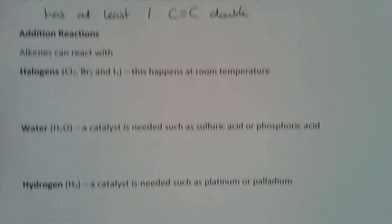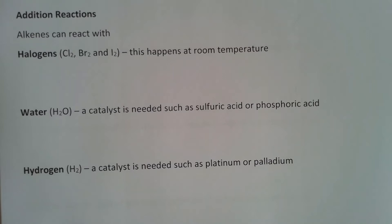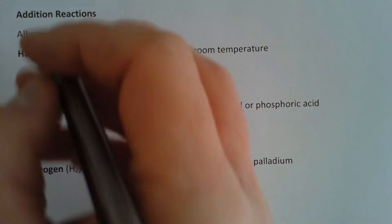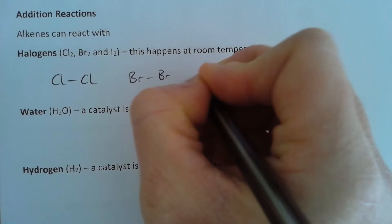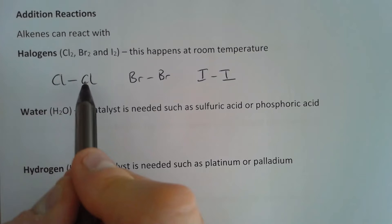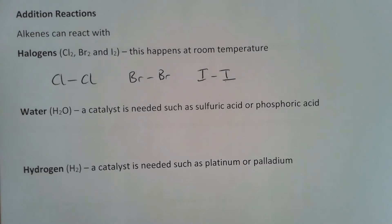Alkenes undergo addition reactions. They can undergo addition reactions with halogens — halogens is the general name for any Group 7 element, and we need to know chlorine, bromine, and iodine. These reactions happen at room temperature. I'll draw the structural formula of each: Cl₂ is a chlorine atom bonded to a chlorine atom; similarly Br₂ and I₂.